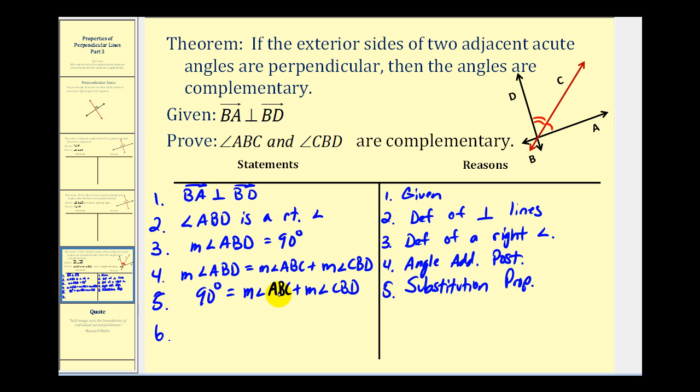For step six, we know the sum of these measures 90 degrees, and therefore angle ABC and angle CBD are complementary. And this is by definition of complementary angles.